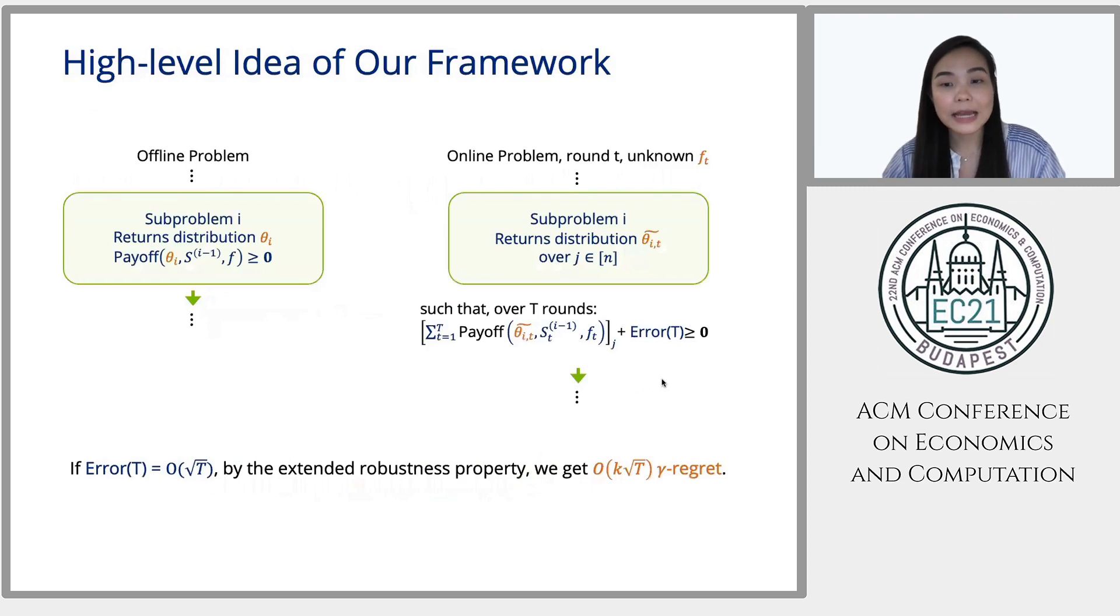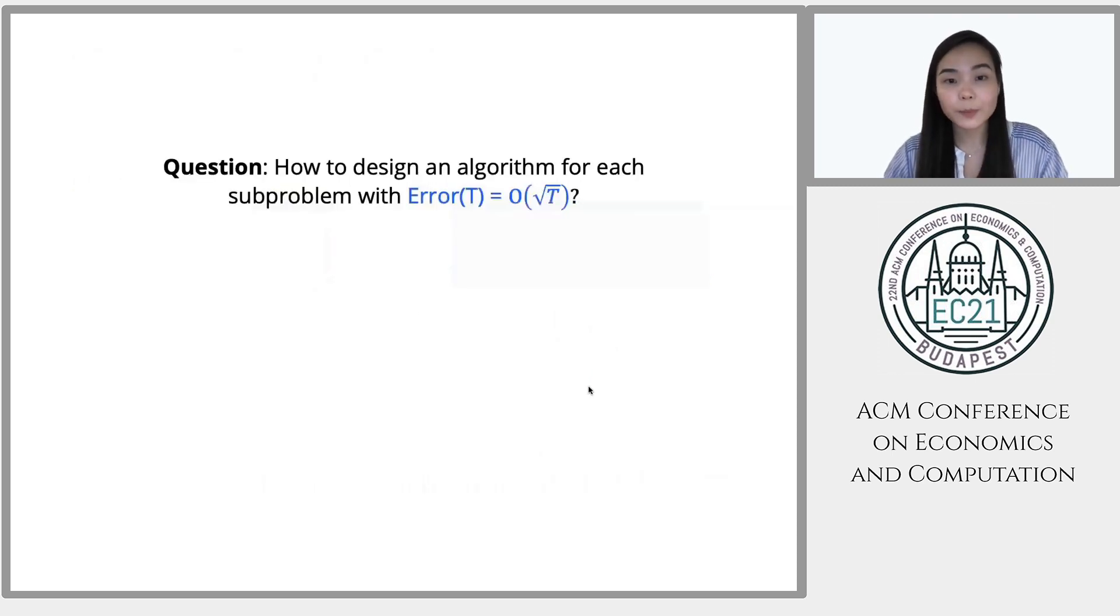Now going back into our high-level idea, so in the offline problem, because we know the function f before making each decision, the greedy algorithm can actually pick the optimal theta i for each sub-problem. But in the online problem, we don't know f of t, let's say in round t, before making decision. So we need a sub-routine for each sub-problem that can return a distribution theta t tilde such that the overall error made by each sub-problem is not big. At most error of t, where error of t grows like square root of t. So if error of t grows like square root of t, then by the extended robustness property, we would get k times square root of t gamma regret. Now, the question is that how can we design an algorithm for each sub-problem such that error of t grows like square root of t? And the answer is Blackwell approachability.